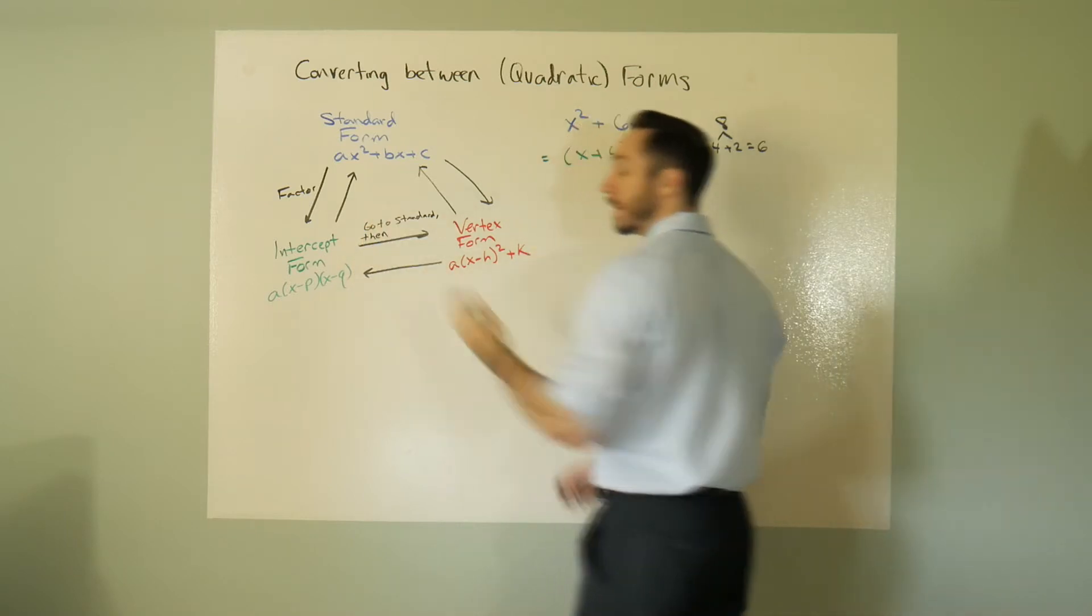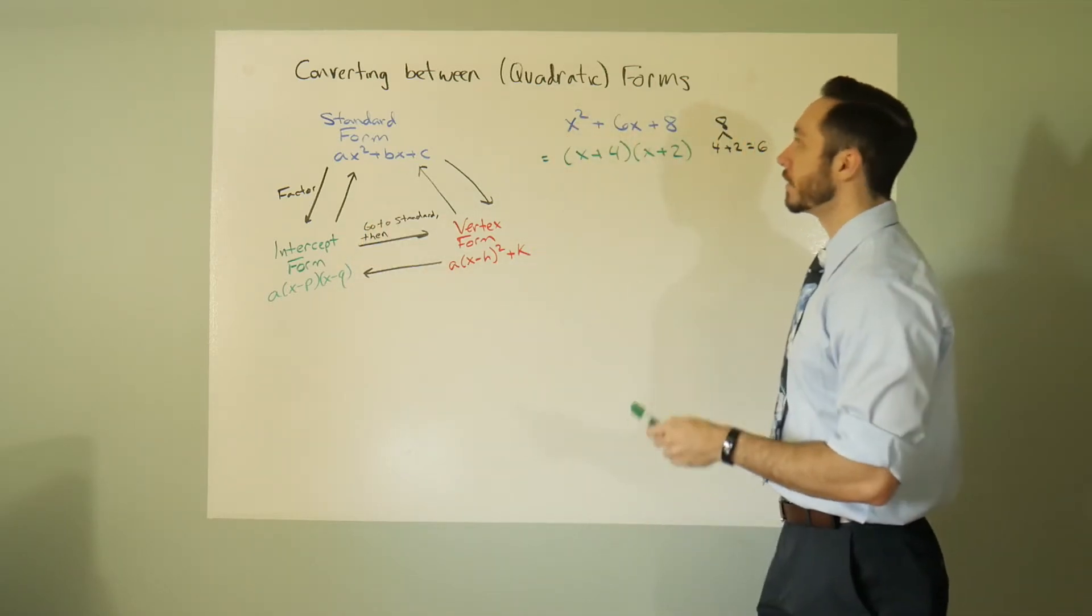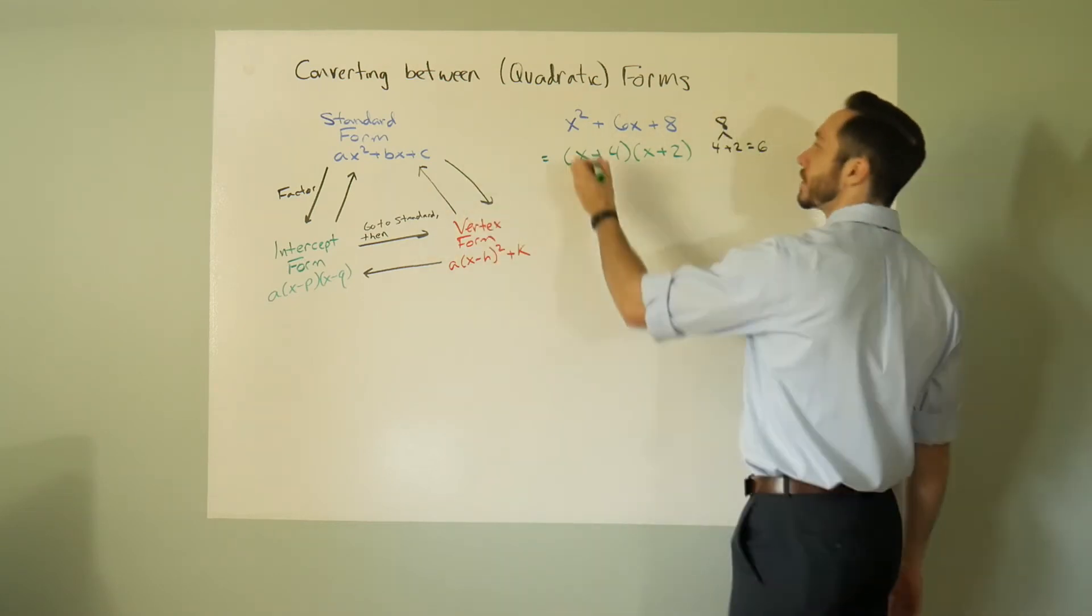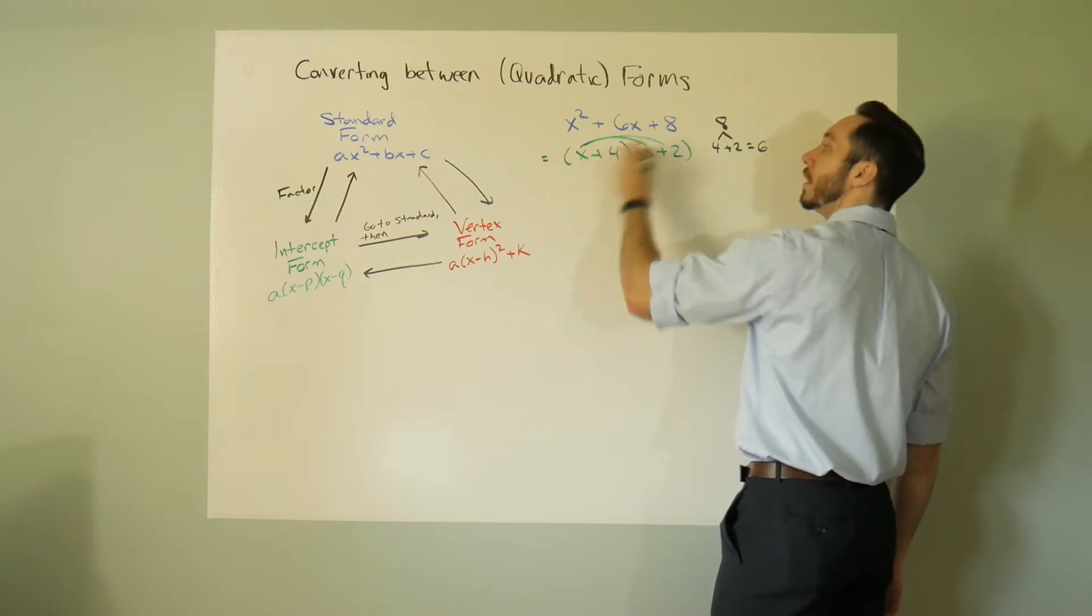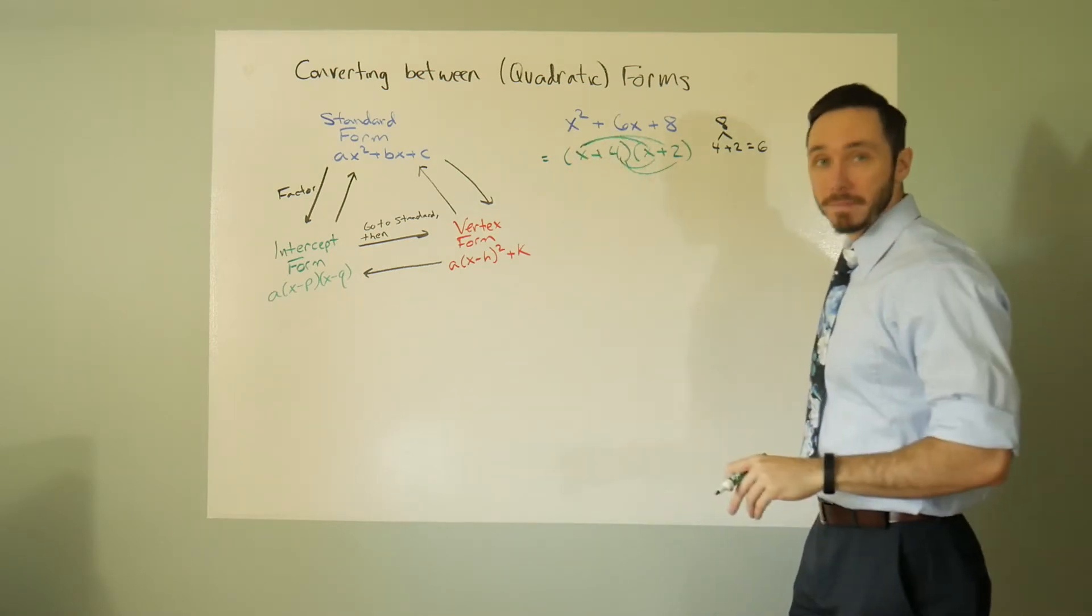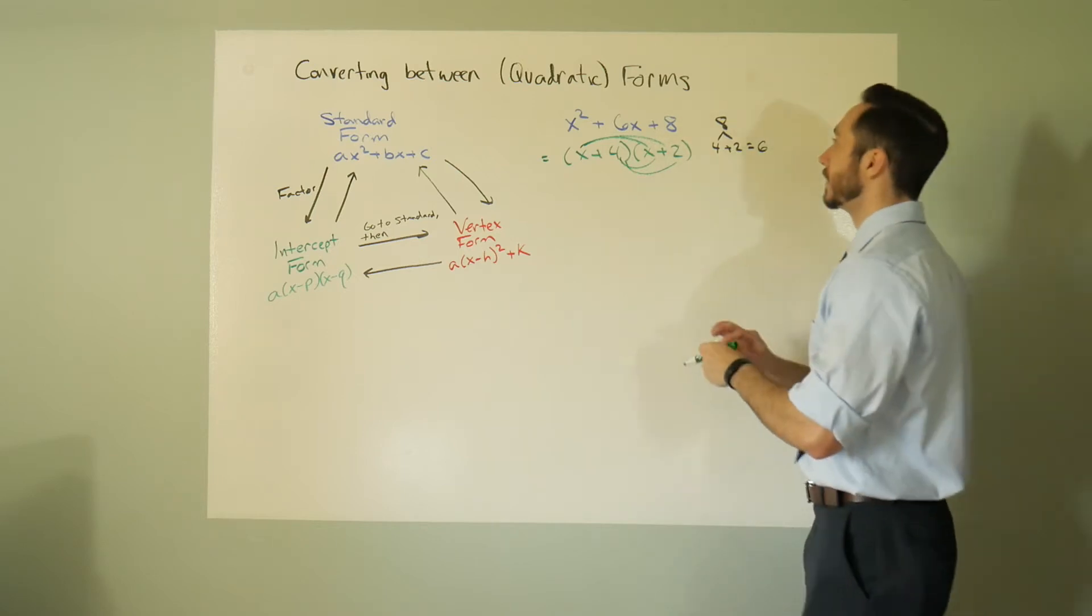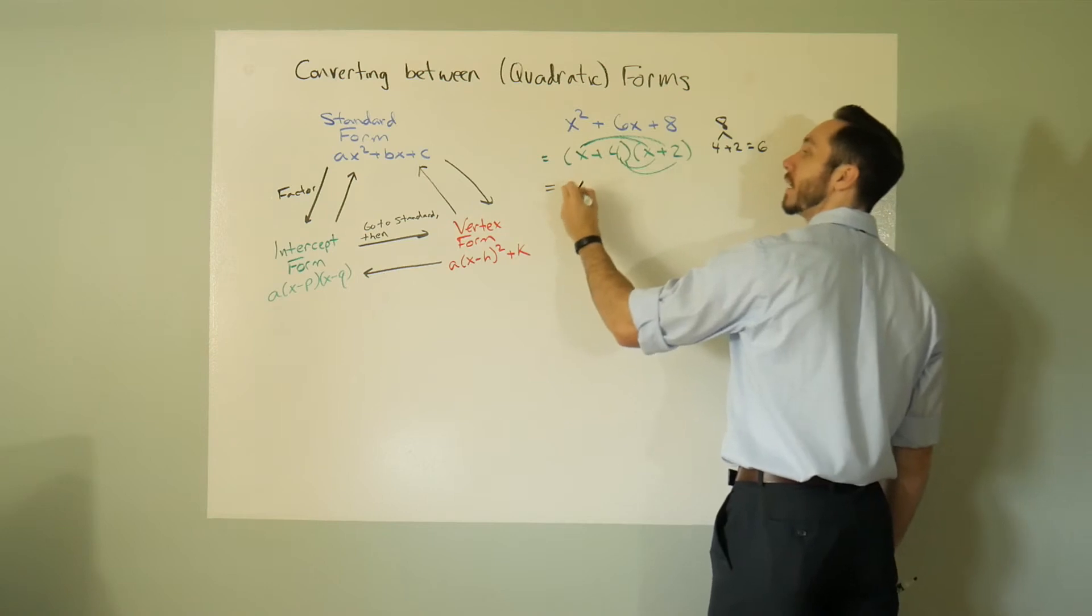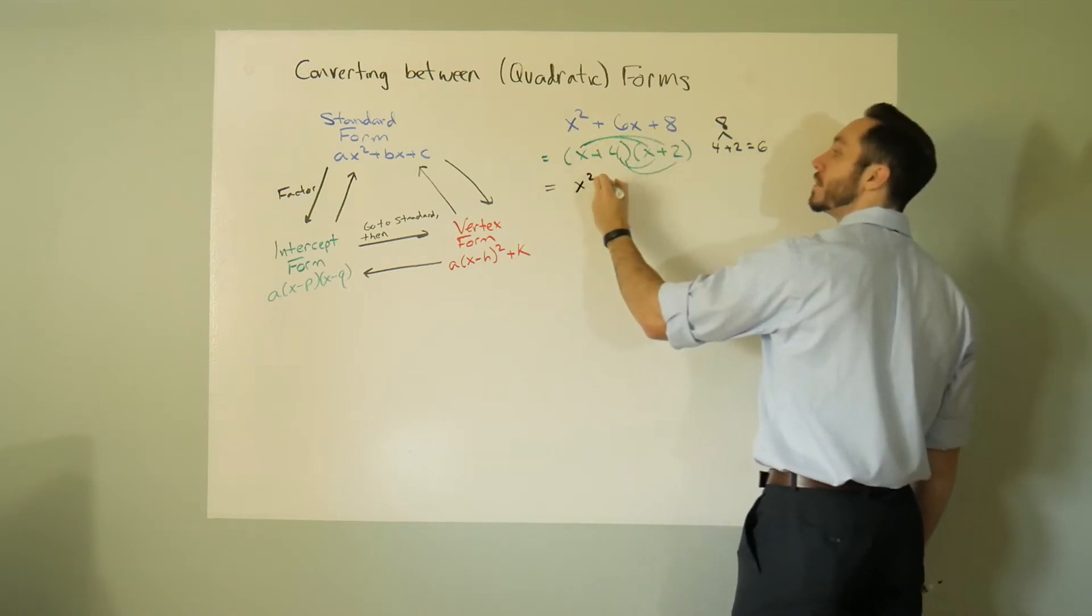The way that we go from intercept form to standard, we distribute. So we would do multiplication. Here we have x times x is x squared, x times 2 is 2x.